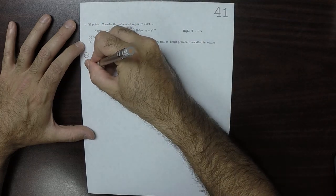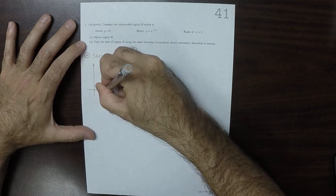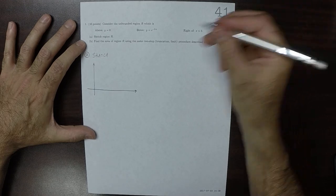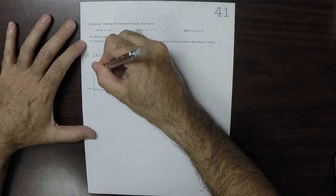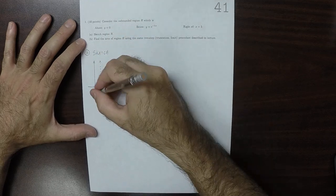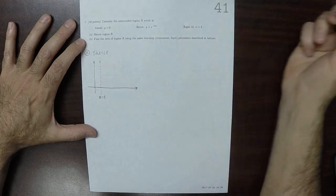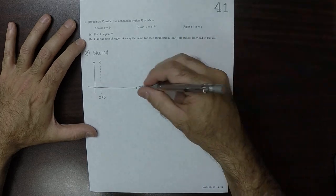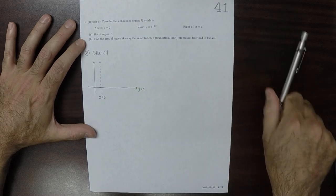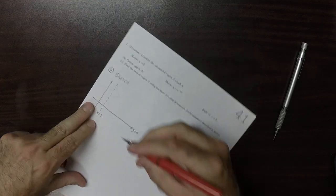So the sketch looks like this. The region R looks like this: x is 5, and then this is y is 0, the x-axis, and then y is exponential of negative 2x. Looks like this.